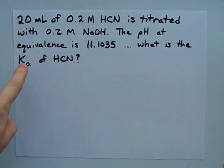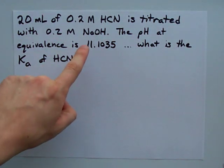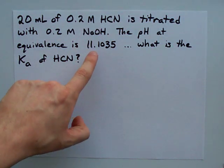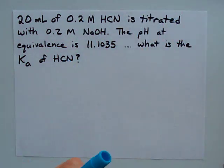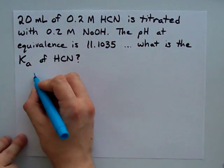How can you find the Ka of an acid from the pH at the equivalence point? You're going to have to know how much stuff you mixed and what you're mixing to do this. The first thing I want to do is a little basic accounting.